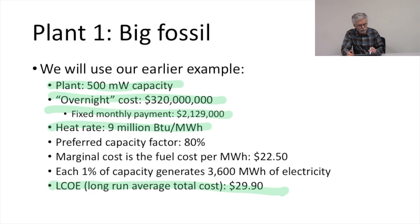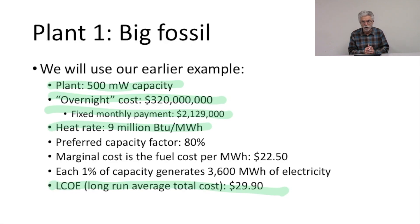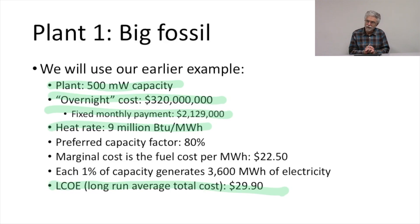The heat rate is assumed to be 9 million BTU per megawatt hour. I'm making these numbers up, so I'm not saying this is exactly like any power plant you know, but we're assuming a heat rate of 9 million BTU per megawatt hour for our fossil power plant, and a preferred capacity factor of 80%. Could be 70%, could be 85%, but in this case we're assuming a capacity factor of 80%.